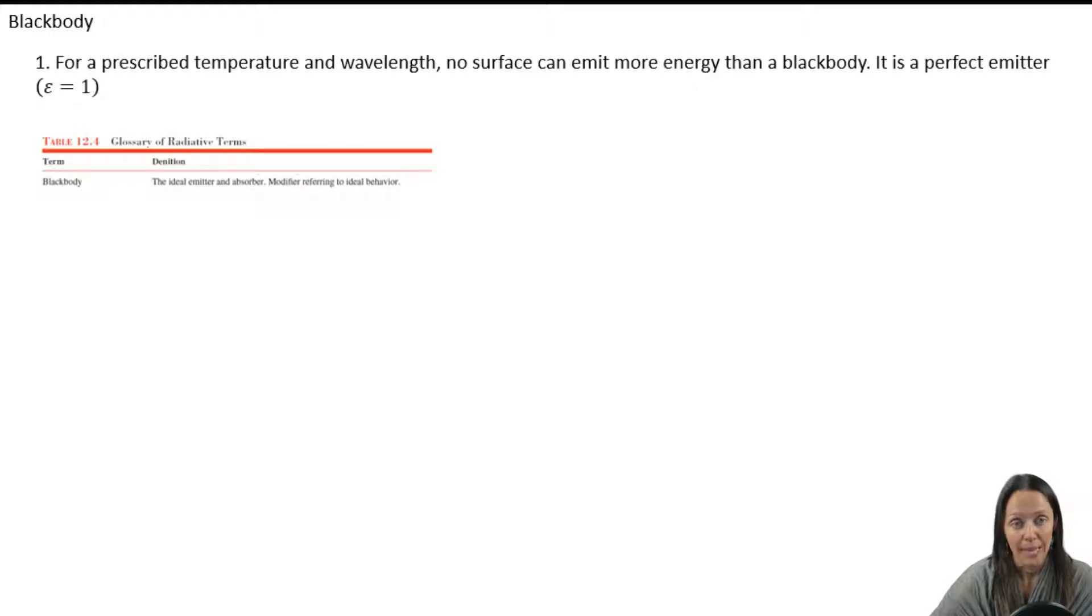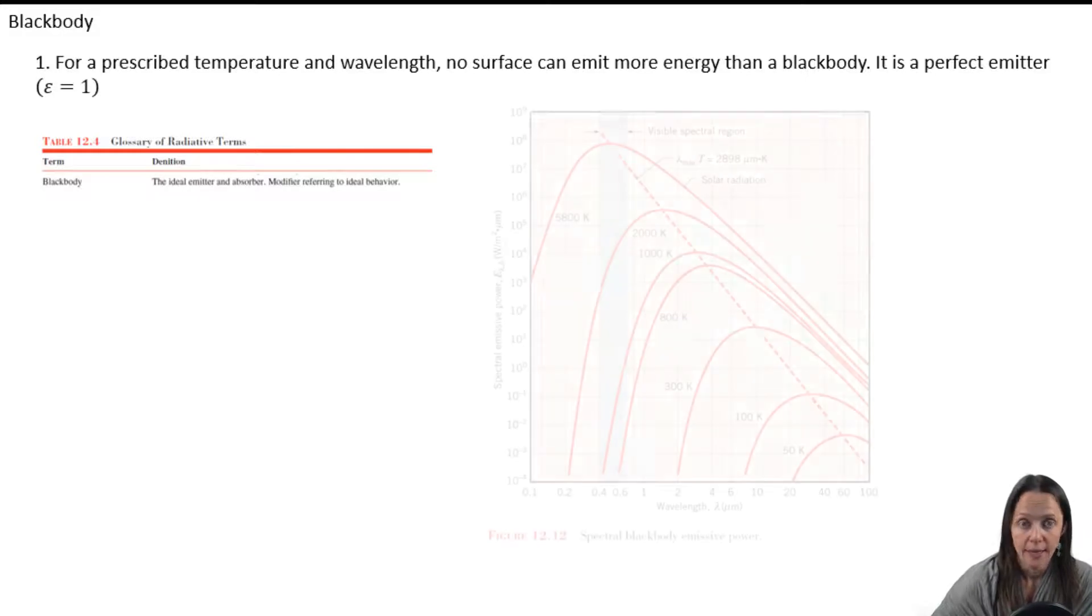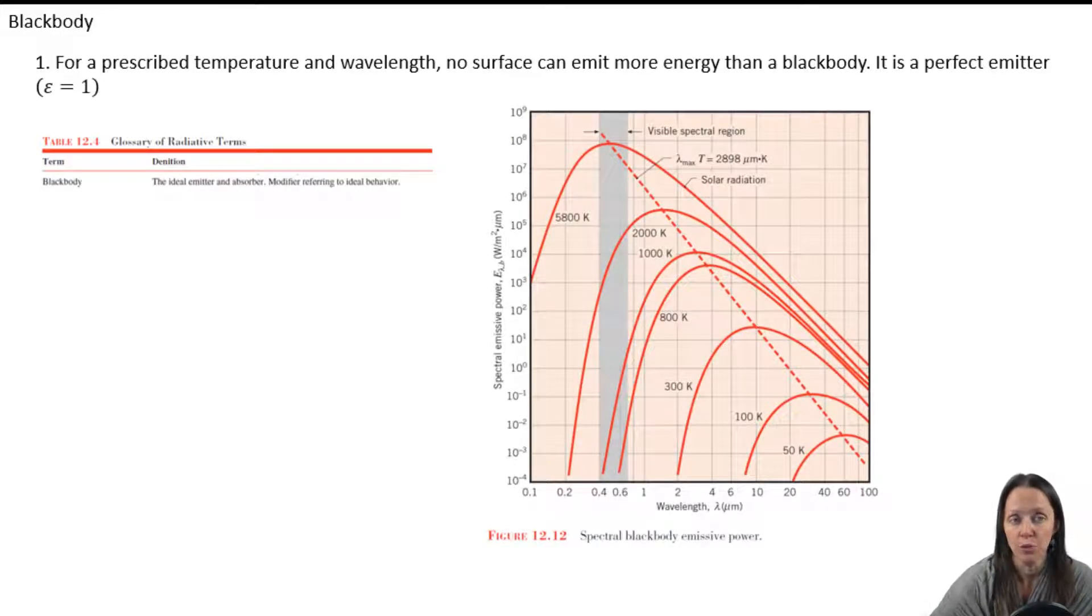Now, back in Chapter 1, we introduced the concept of a black body. We said that a black body is a perfect emitter, so the emissivity is 1. Now, take a look at Figure 12.12 in your book. On the x-axis, you see the wavelength. And on the y-axis, you have the emissive power.